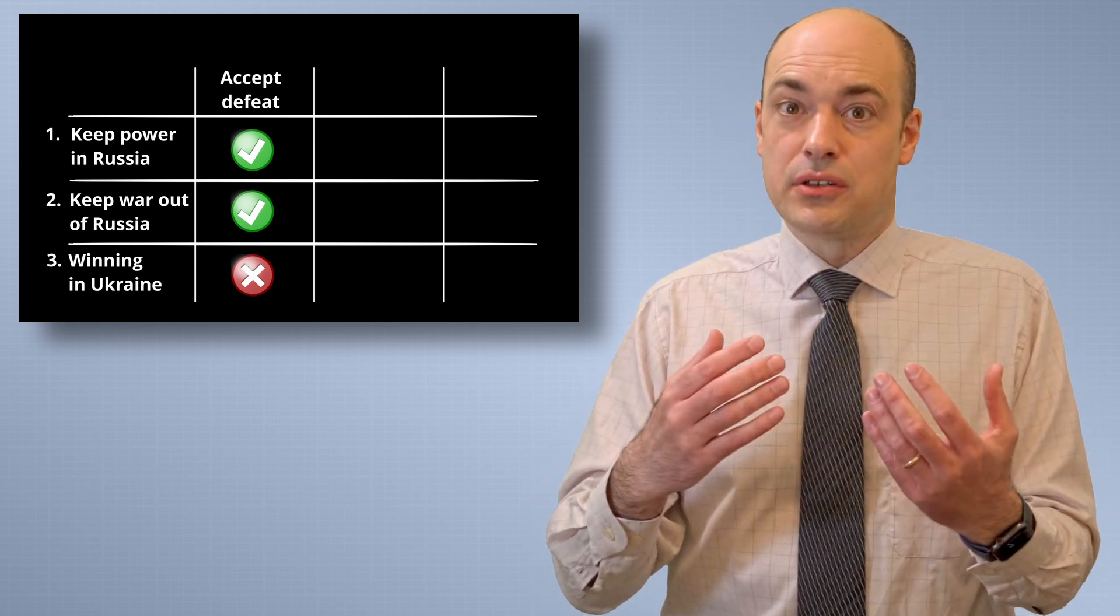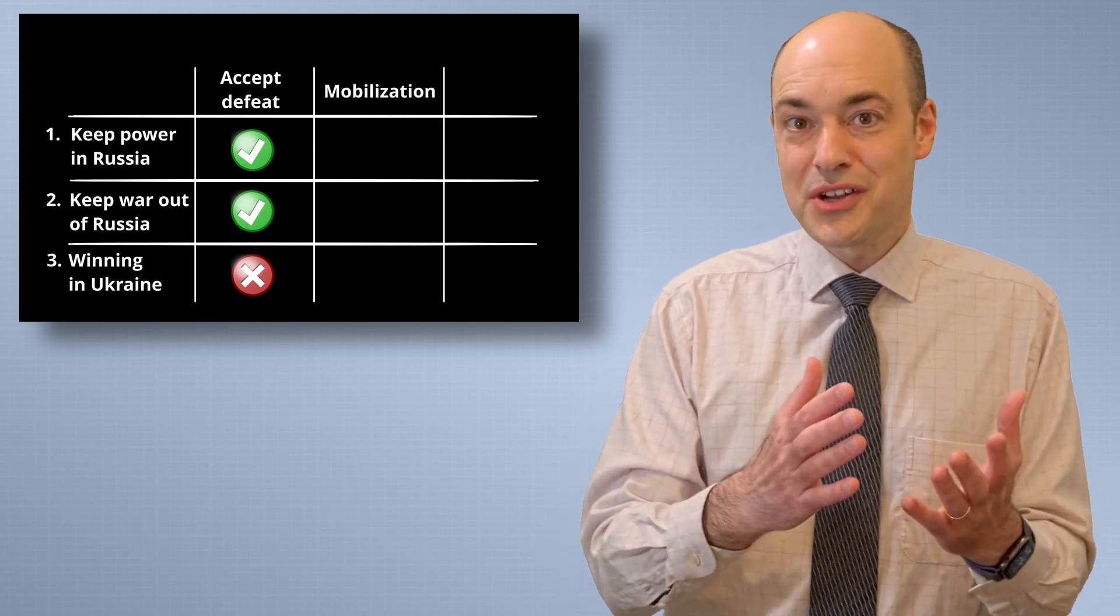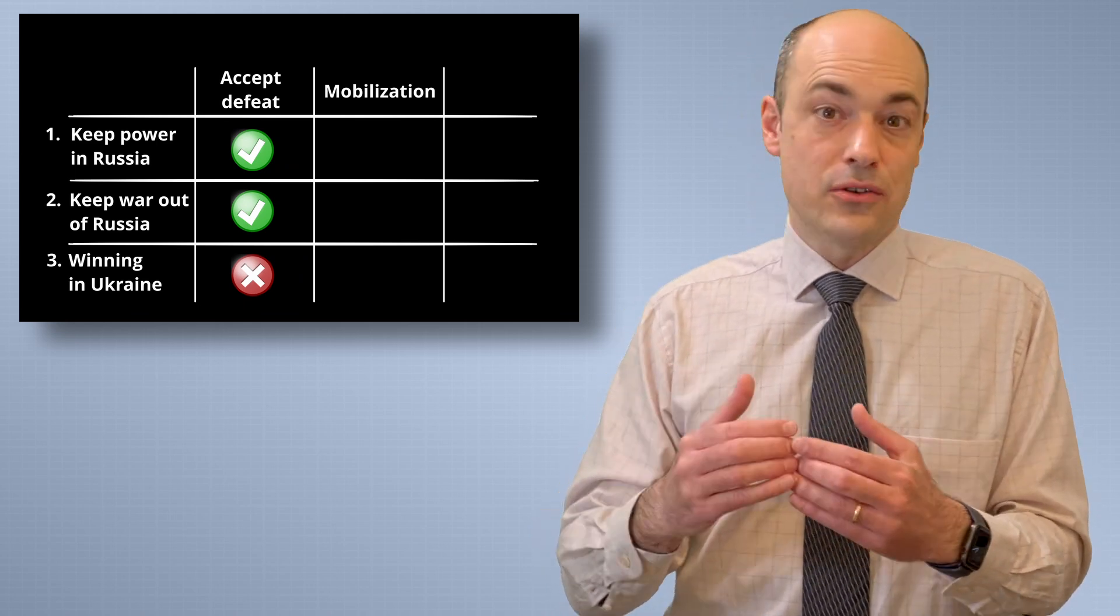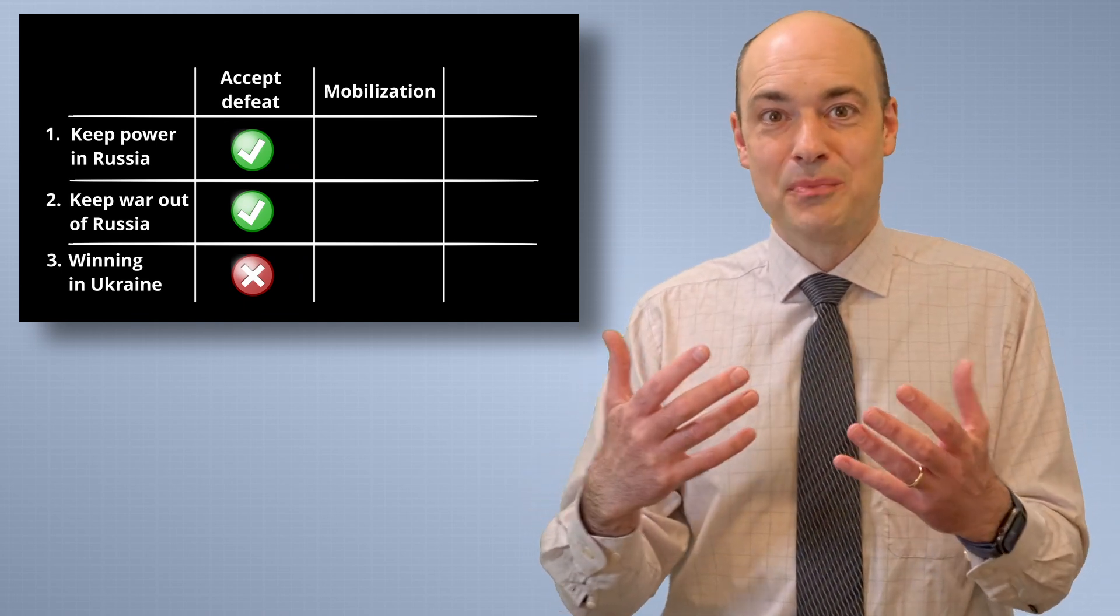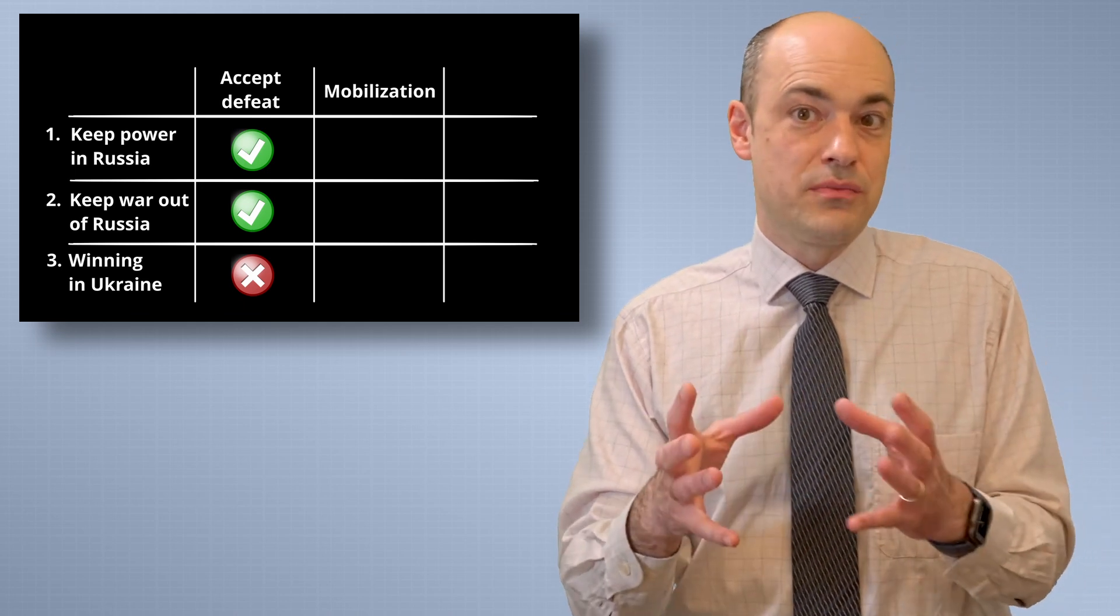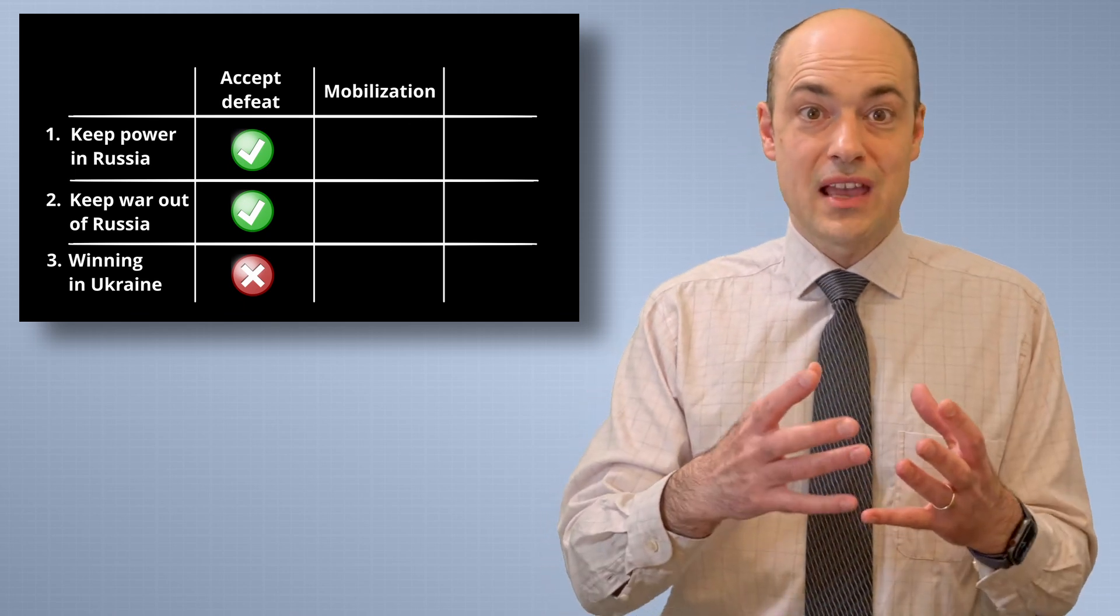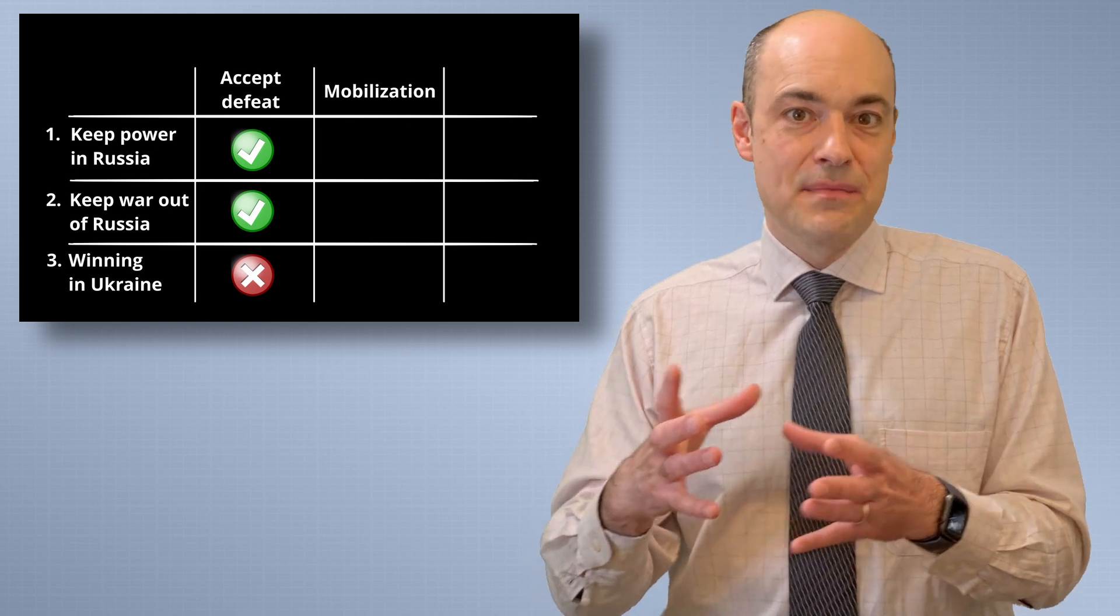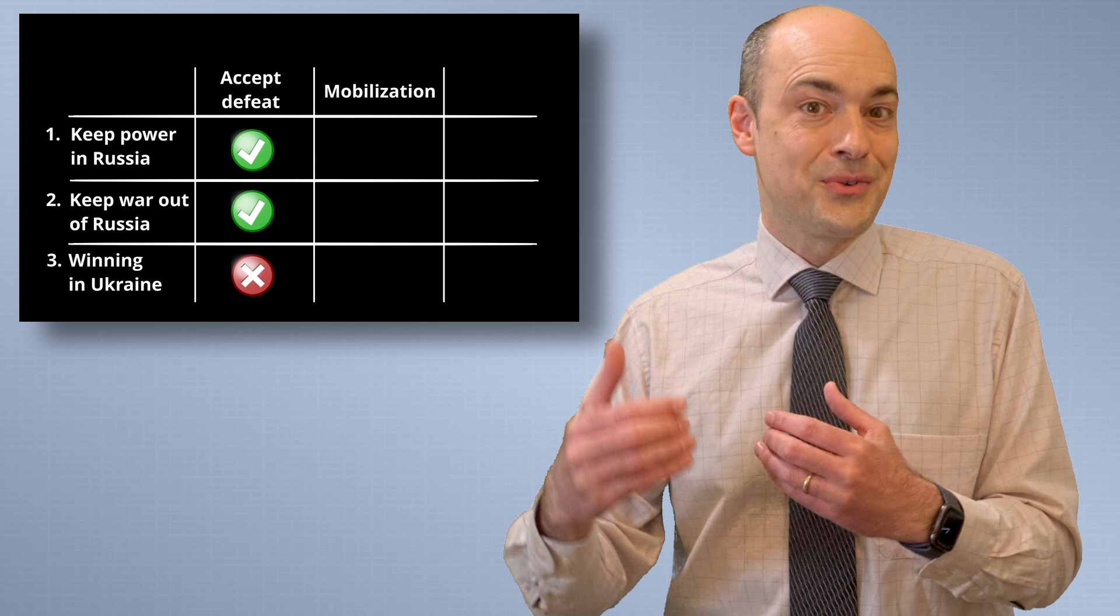The second option that Putin has is mass mobilization in Russia. This is the option that Ben Wallace talked about. So at the moment, Russia is trying to fight the war in Ukraine at their peacetime strength. And they have committed about 100% of the available forces. But if Putin declares that it is a real war and no longer a special military operation, then he has more soldiers than he can use. There are conscript soldiers, and he can call in the reserves, and he can mobilize the broader population. So this is something that can change the war in Ukraine because we're talking about a very big number of soldiers that Russia can mobilize.